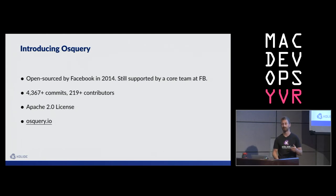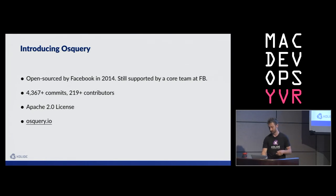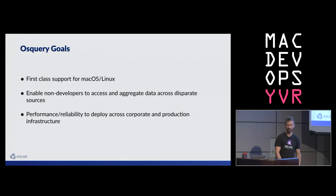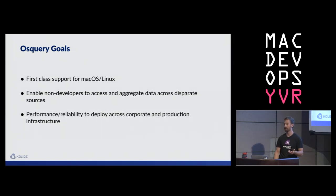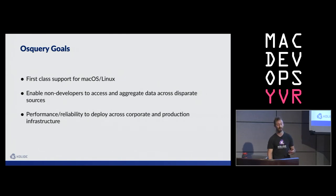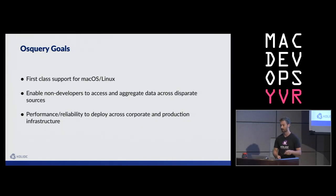It's an Apache 2 license, so you're pretty free to use it how you like. If you want more information on the OS Query project, check out osquery.io. The first goal was first-class support for Mac OS and Linux. In 2014, there wasn't a great open source endpoint agent for running and collecting information on Macs in particular. So OS Query was built Mac-first and also Linux-first. More recently there's Windows support, so you can use it across all your platforms.